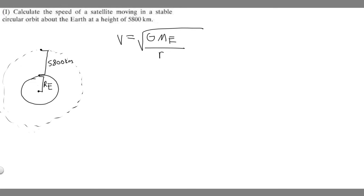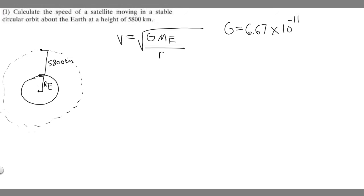Let's look at the different variables we need to solve this. The first thing we need is G, the gravitational constant throughout the universe. This is a number you need to memorize: 6.67 times 10 to the minus 11. Next, we need the mass of our planet — in this case, the Earth. That's another number you have to memorize: 5.98 times 10 to the 24, and this is in kilograms.